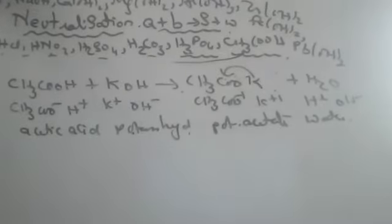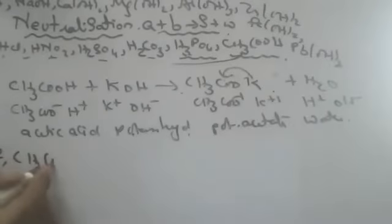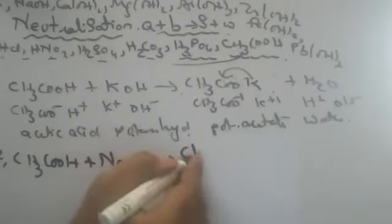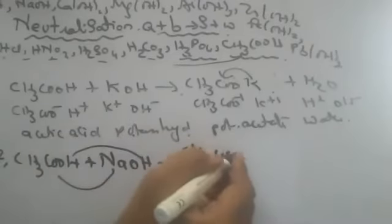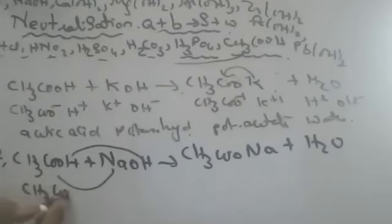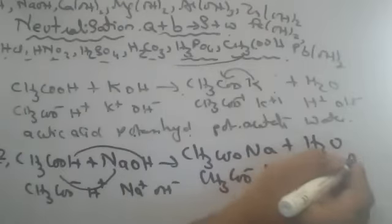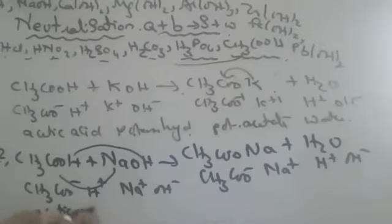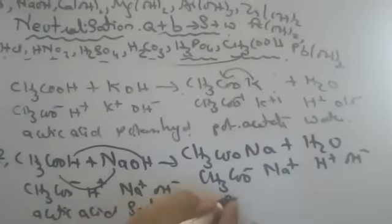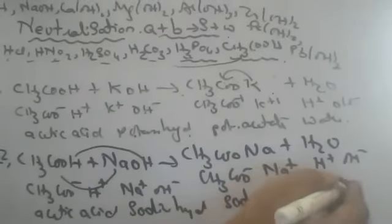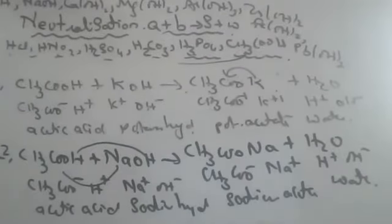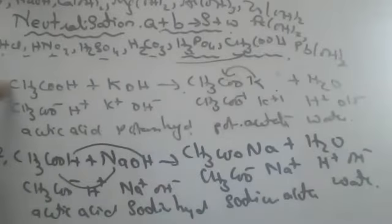Next reaction: CH₃COOH plus NaOH gives CH₃COONa plus H₂O. The ionic equation: CH₃COO minus, H plus, Na plus, OH minus — gives CH₃COONa plus water. The acid is acetic acid, base is sodium hydroxide, and the salt is sodium acetate. In the exam, write all three steps carefully.